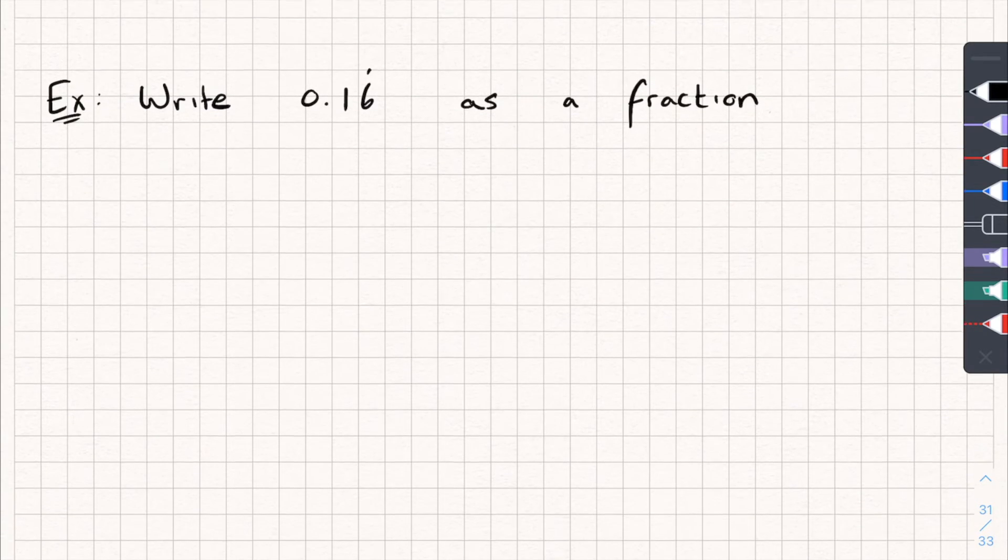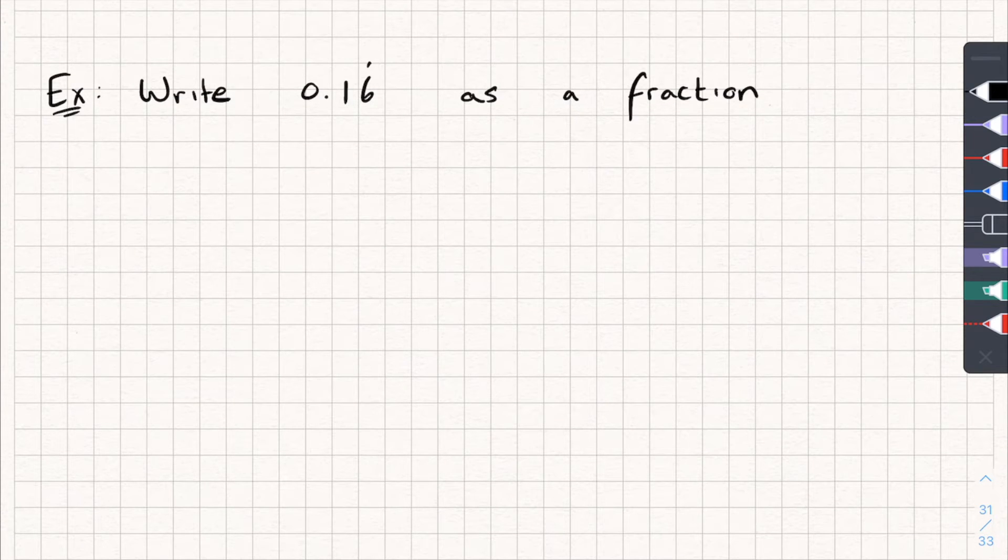Now, there's one final type that you might have to do, which is not very tricky, but it's the trickier type. And we'll start the way we always do. Let x equal 0.16 recurring. Nice and easy.